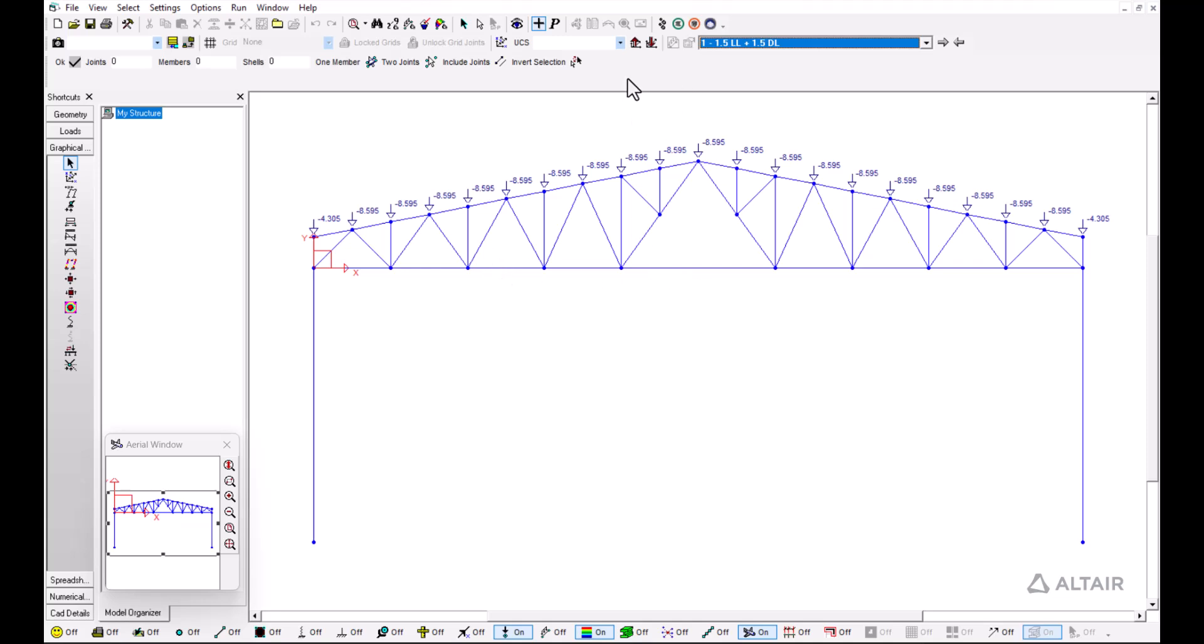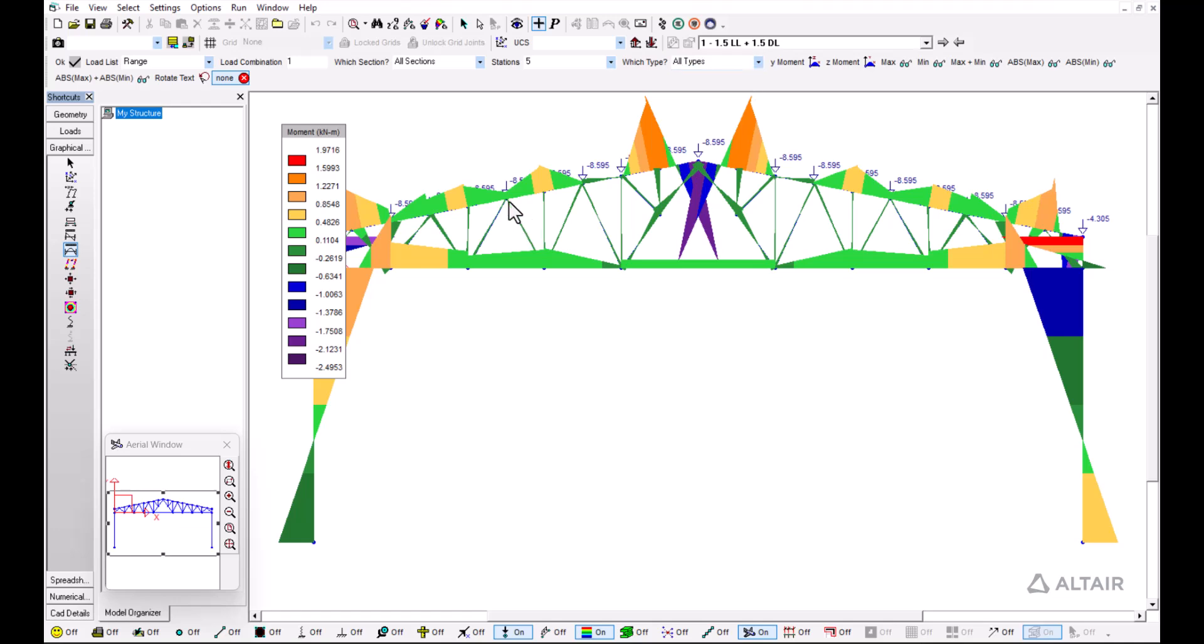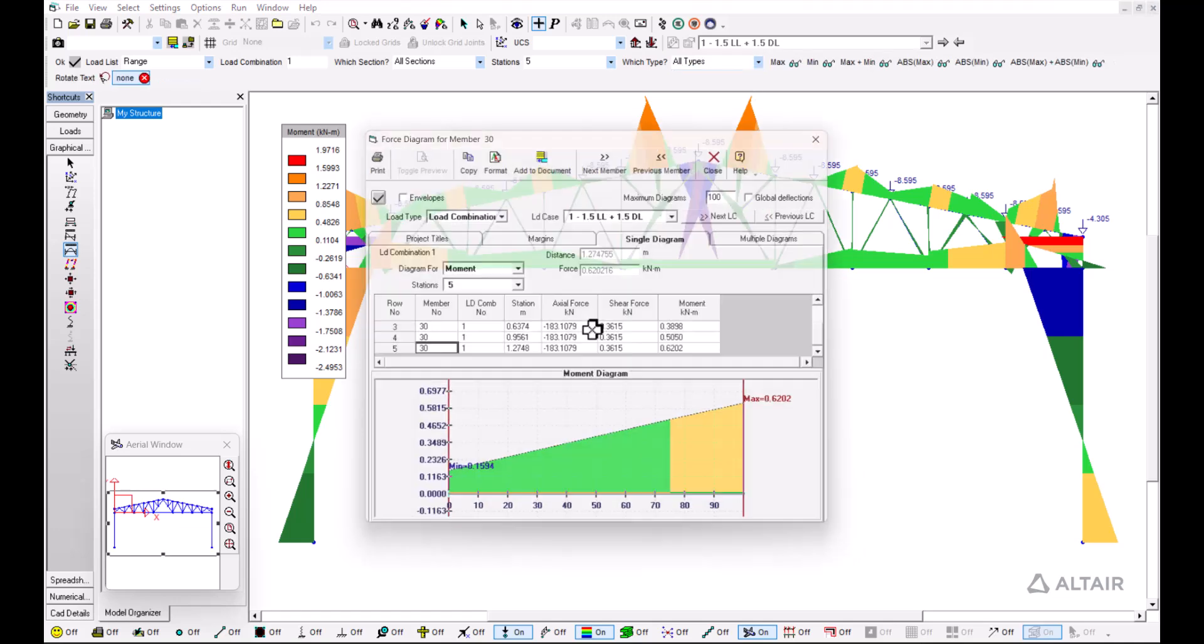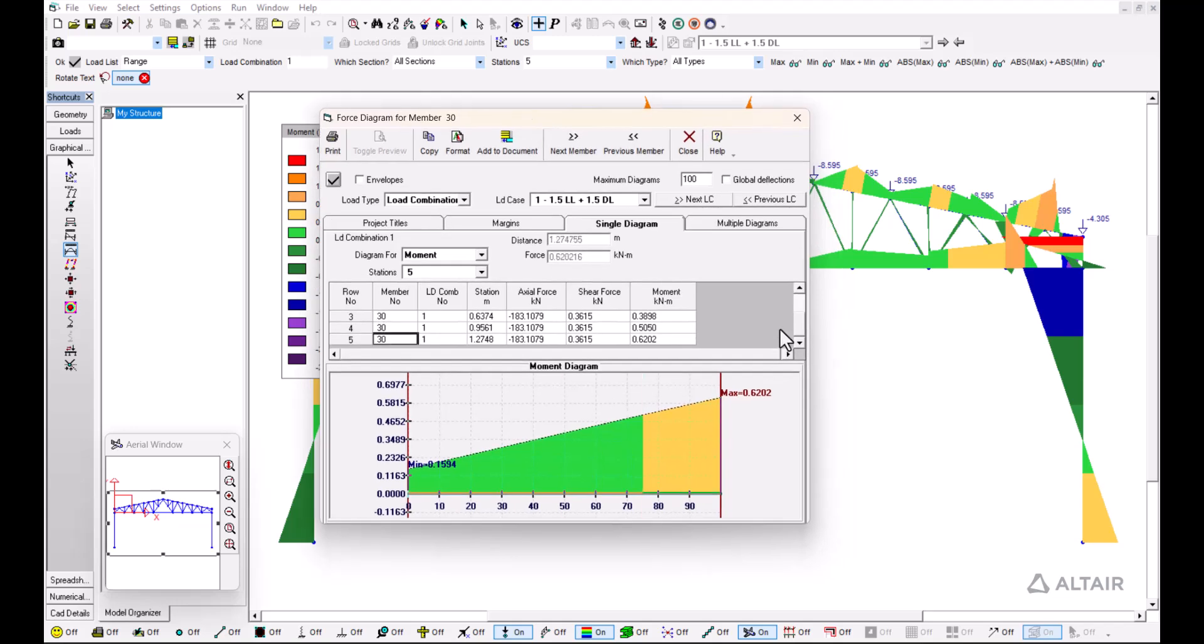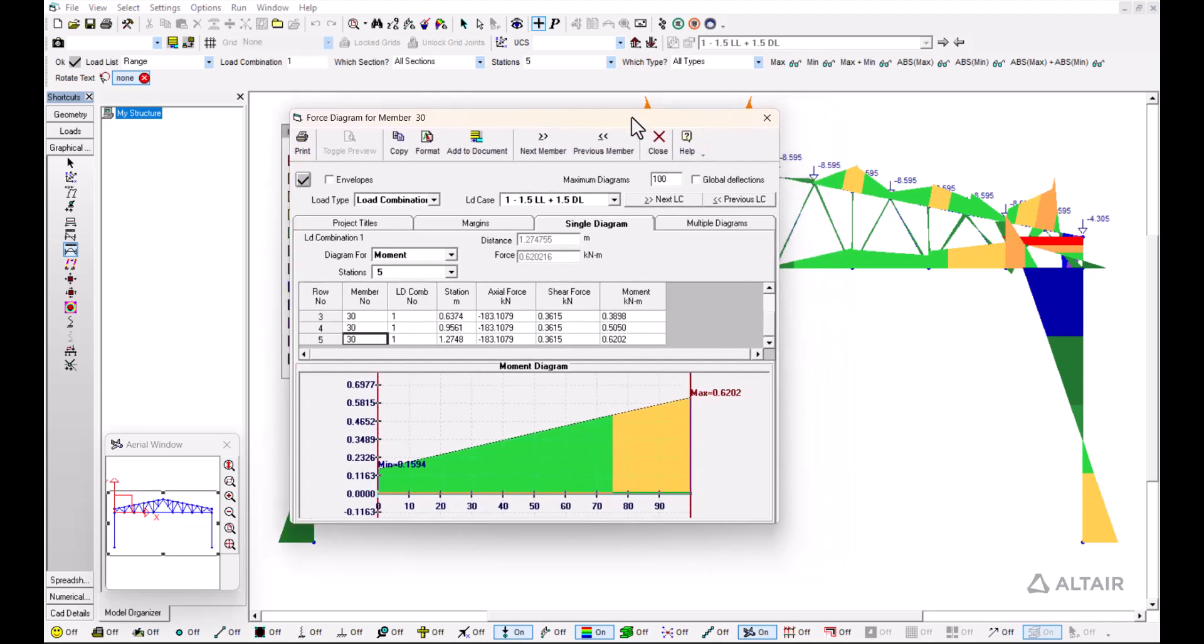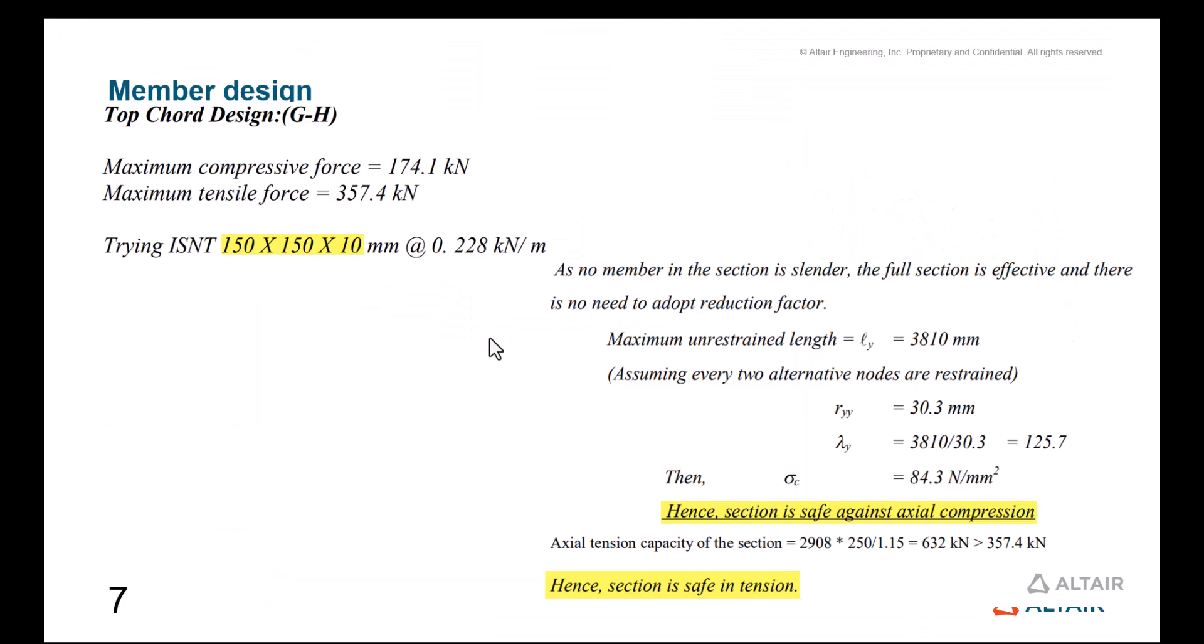Once we have this, we can take a look at the individual results, the individual analysis for each of the members. We can take any of these members, look at the properties, and compare the results. We take these results to design our members and provide the member size.